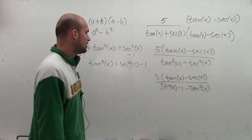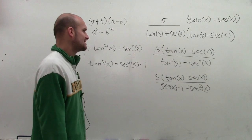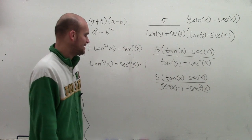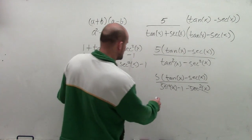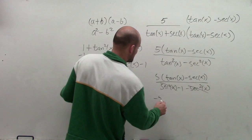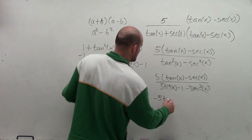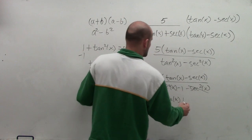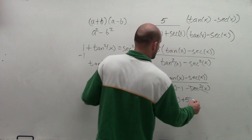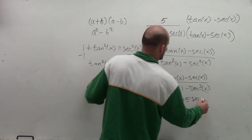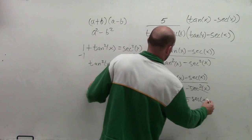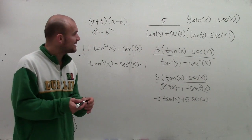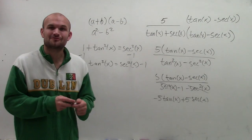So I have 5 times (tangent of x minus secant of x) divided by negative 1. Distributing the 5 and dividing by negative 1, I get negative 5 tangent of x plus 5 secant of x. The problem is now written in non-fractional form.